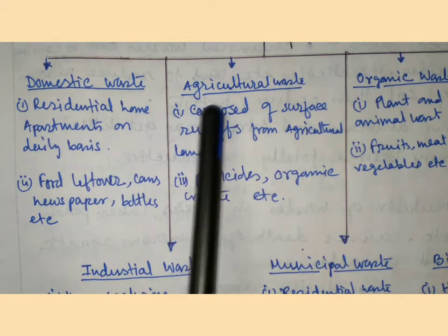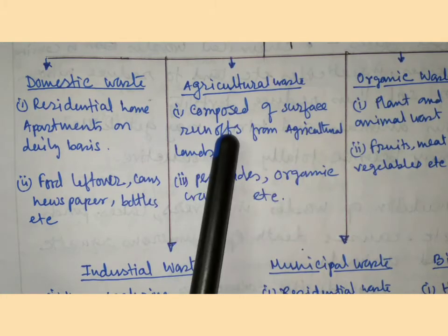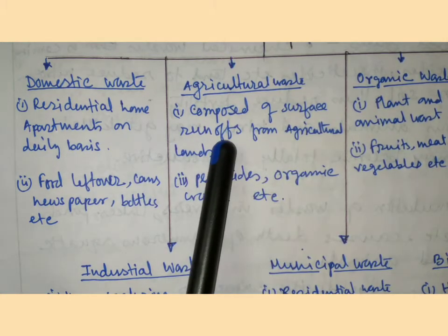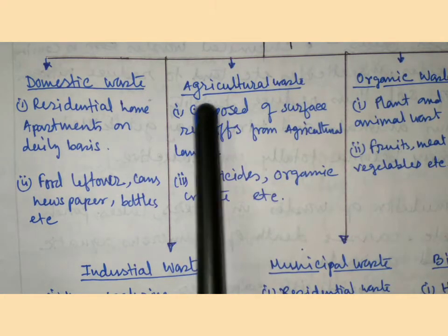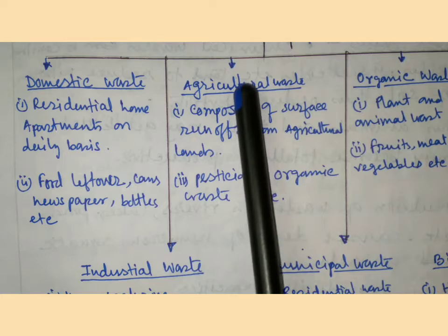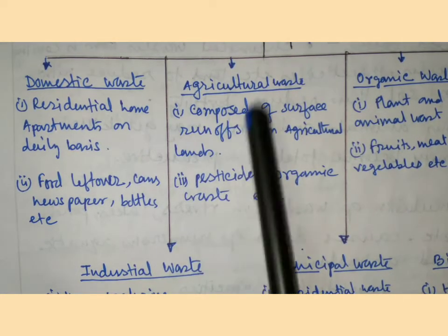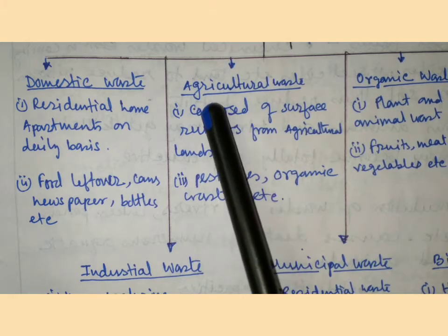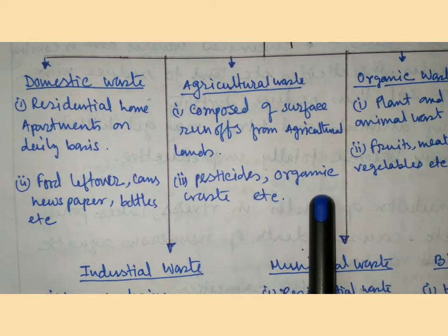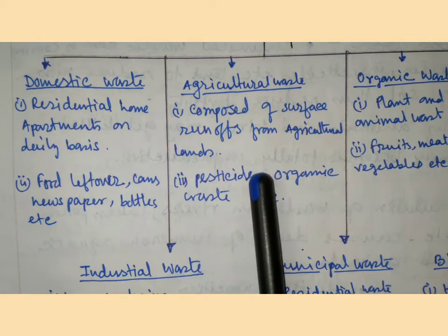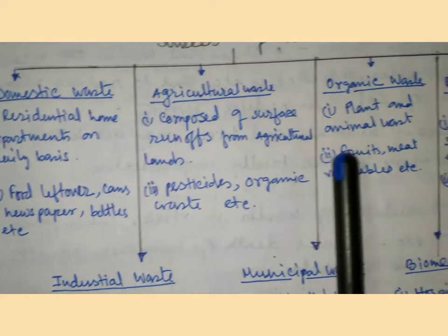Agricultural waste is composed of surface runoff from agricultural lands. From agricultural areas we get waste such as pesticides, organic waste, etc. These are examples of agricultural waste.